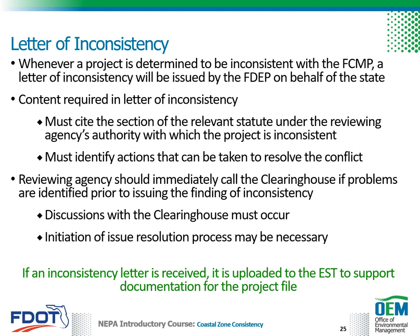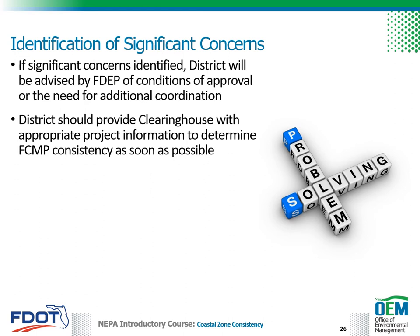Prior to actually issuing a finding of inconsistency, the reviewing agency should immediately call the clearinghouse if problems are identified. If any consistency reviewing agency indicates that the project is not consistent, this would trigger discussions with the clearinghouse and possibly initiate the issue resolution process described in Chapter 4 of the ETDM Manual. If an inconsistency letter is received, it is uploaded to the Environmental Screening Tool to support documentation for the project file. If significant concerns are identified during the advance notification or AN review, the district will be advised by the Florida Department of Environmental Protection of conditions of approval or the need for additional coordination. The clearinghouse should be provided with project information of sufficient scope and detail to determine whether the project is consistent with the requirements of all applicable FCMP statutes.